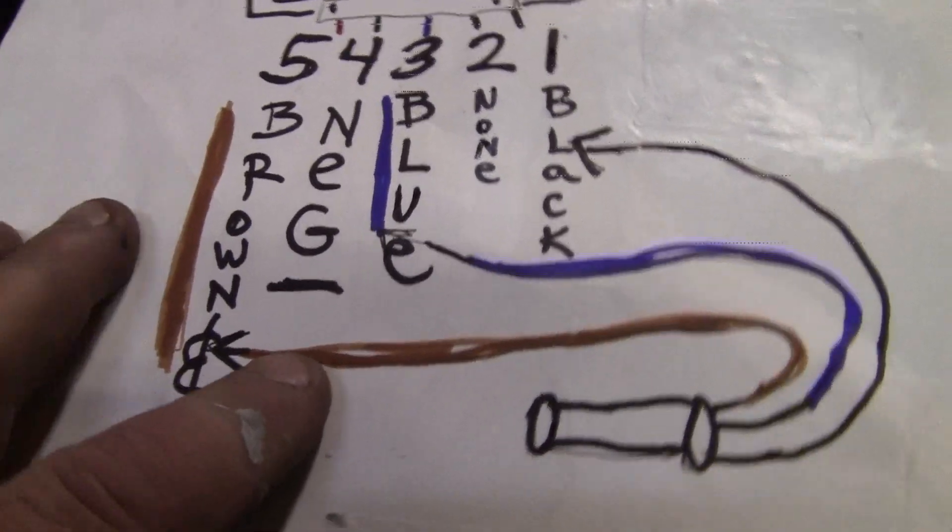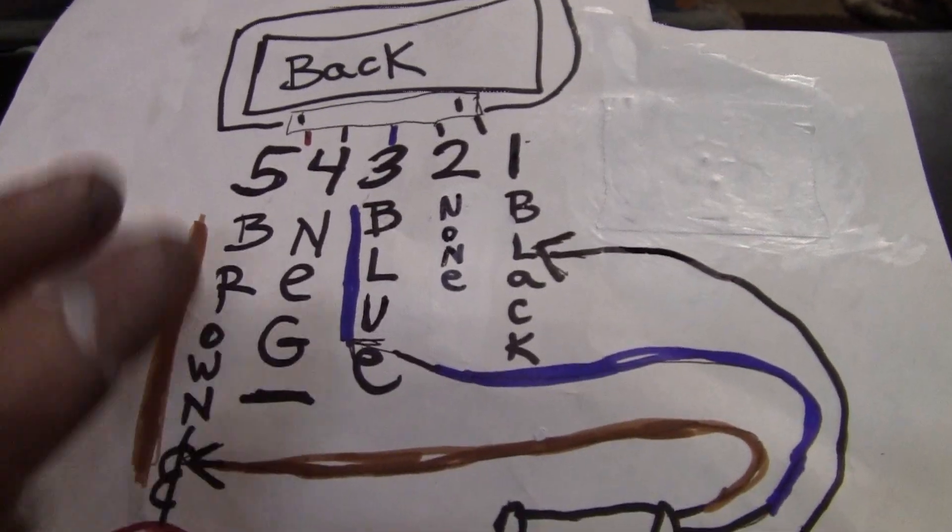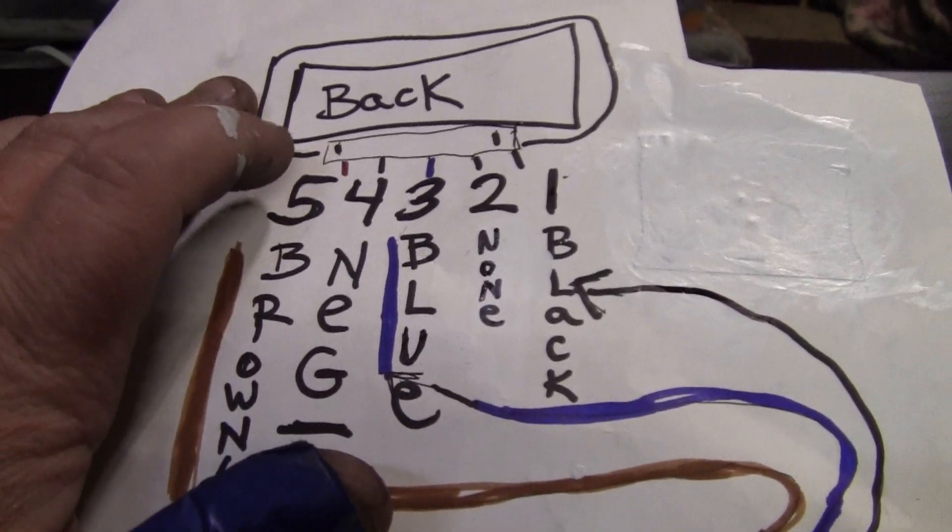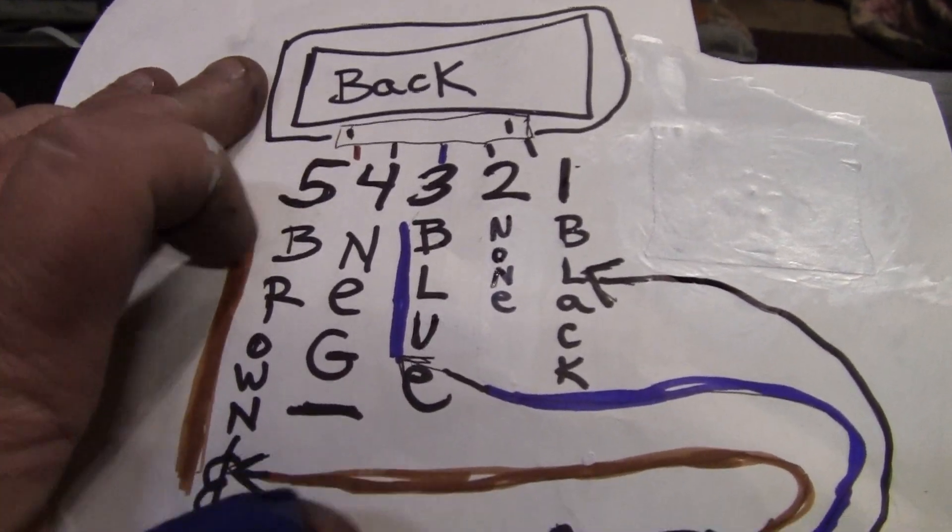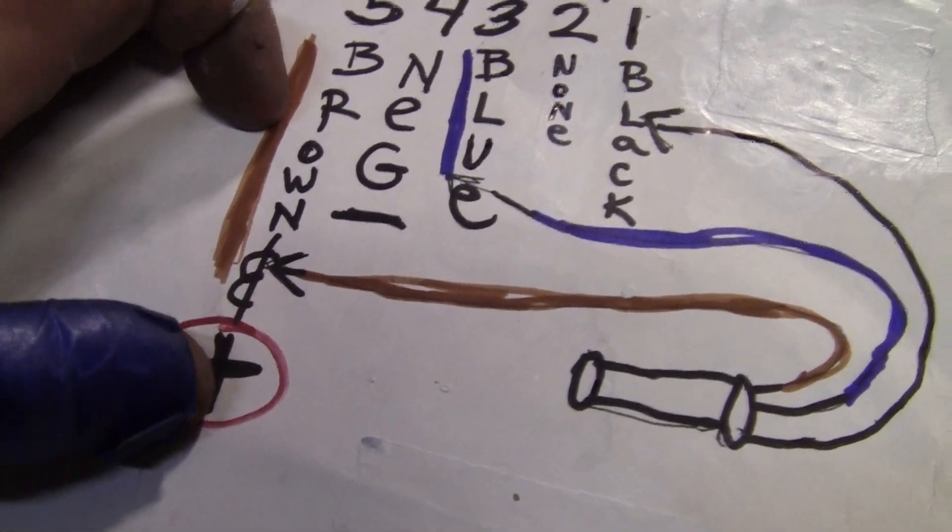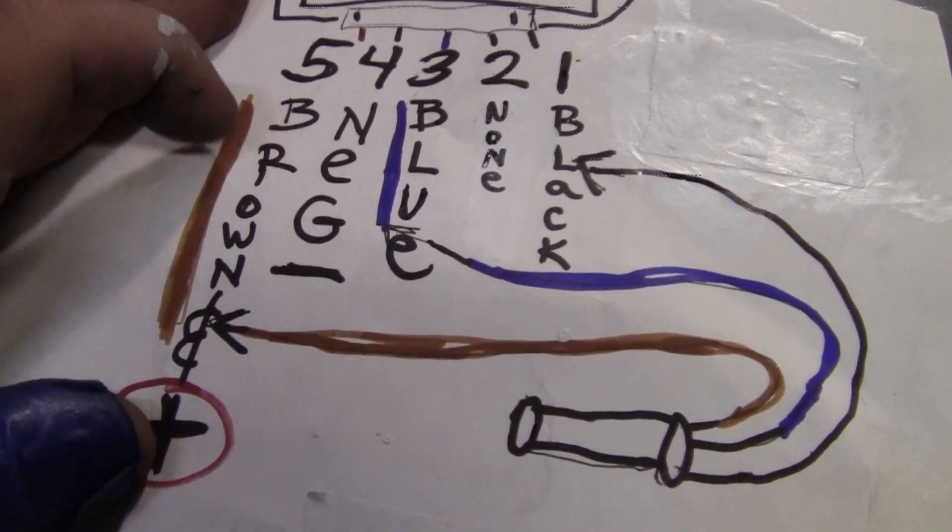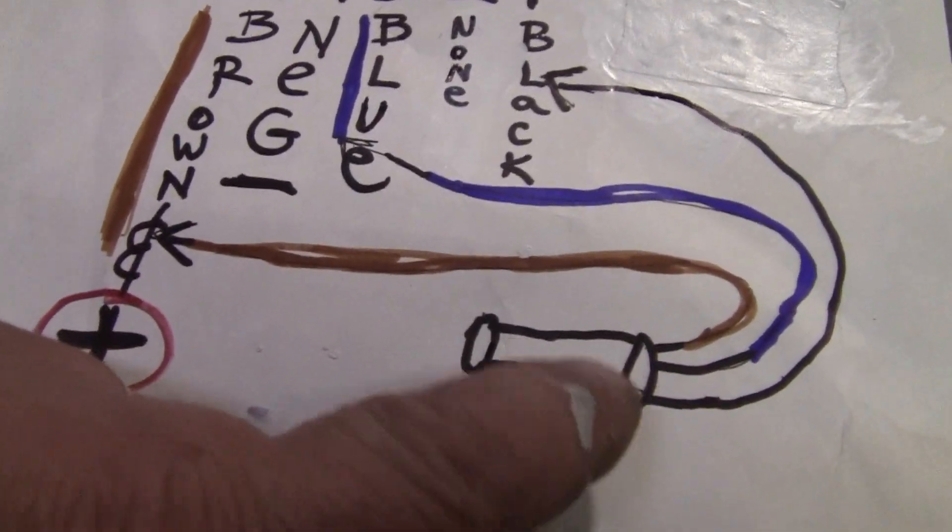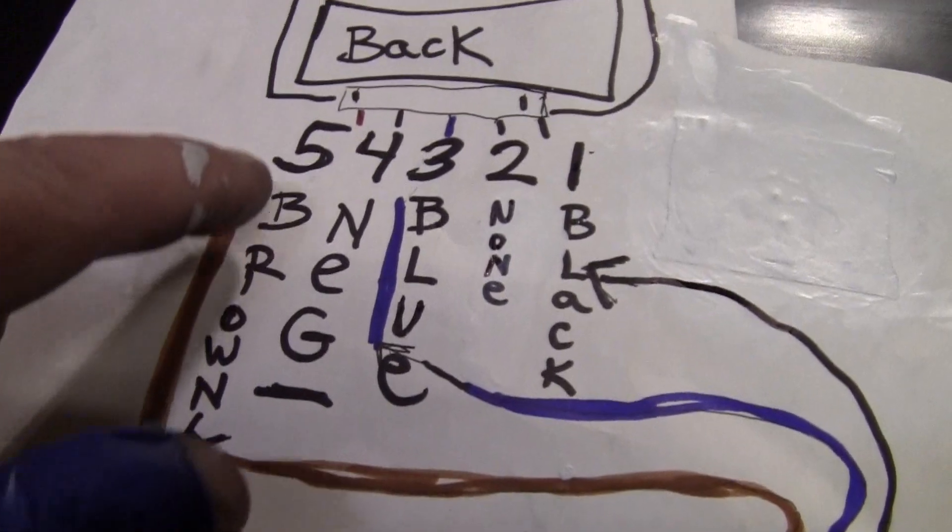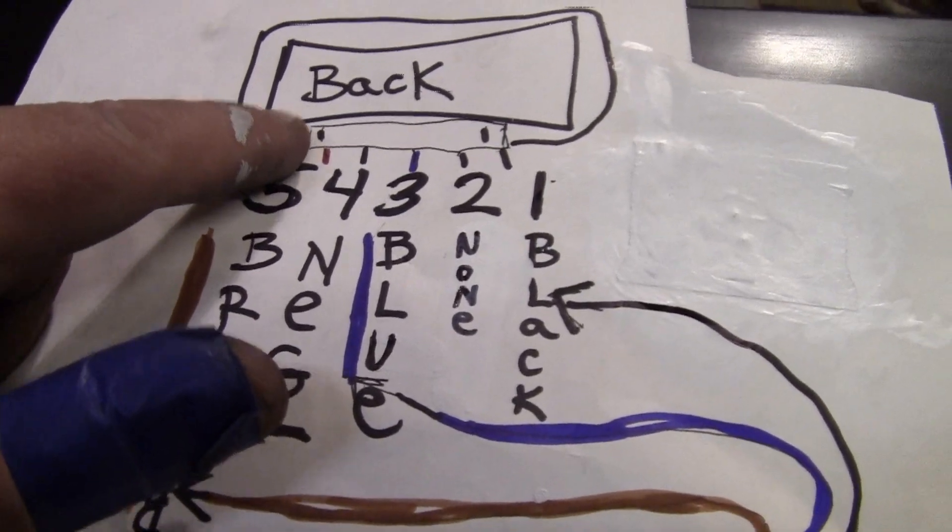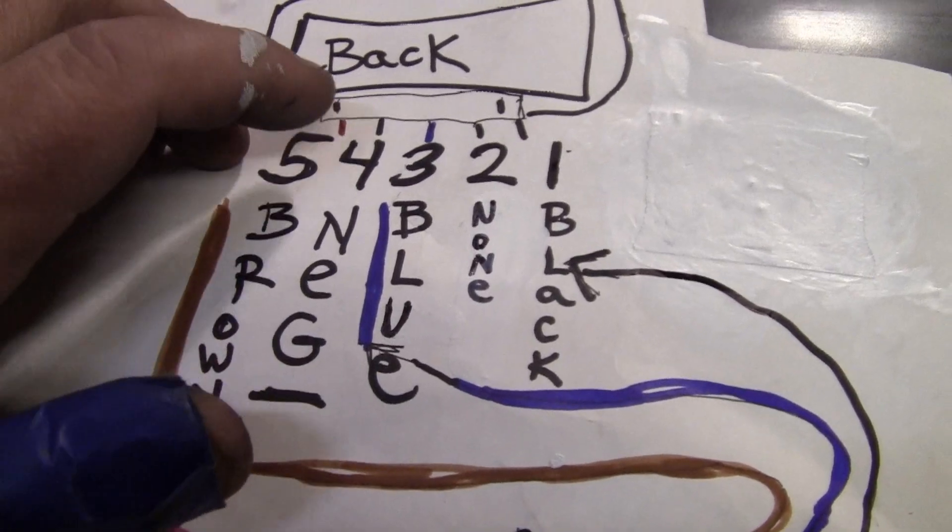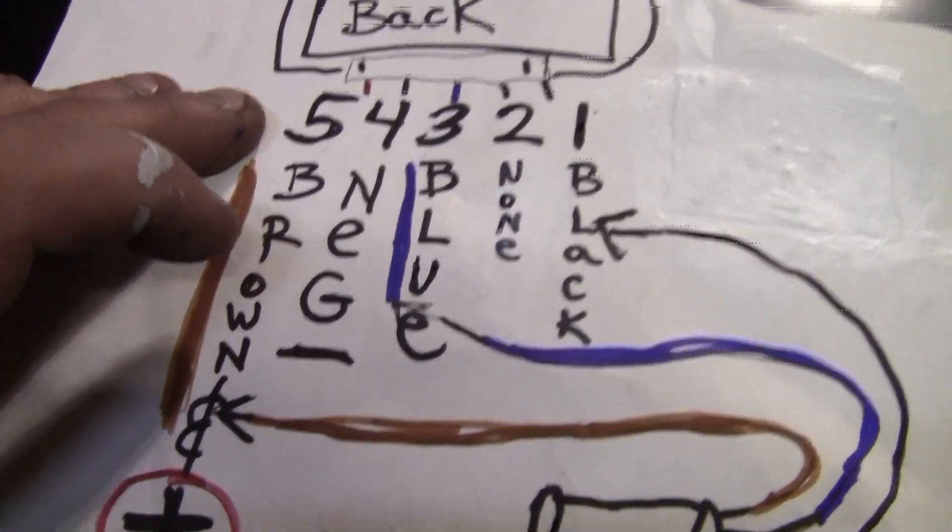Brown is, if you want to start from the left-hand side, brown is positive battery or positive power. Brown from your sensor goes to the meter. Four is negative.